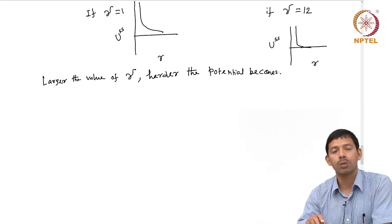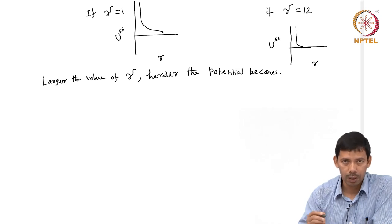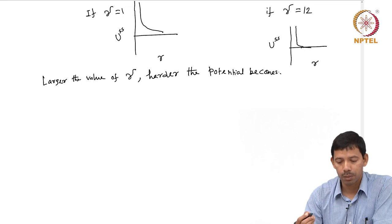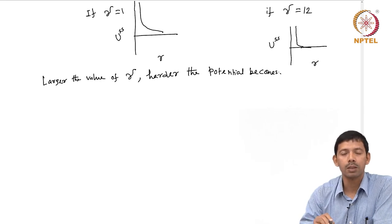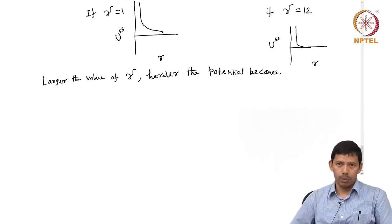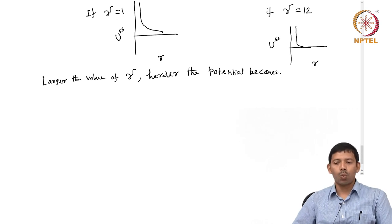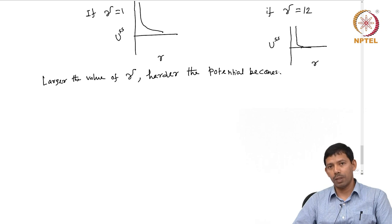All three model potentials have some advantages and disadvantages. Hard sphere and soft sphere potentials do not have any attractive term. Square well has an attractive term because it has minus epsilon when r is between sigma_1 and sigma_2. However, the problem with the square well potential is that even though it has an attractive term, the potential is not continuous — it is a discrete potential. Same is true with the hard sphere.